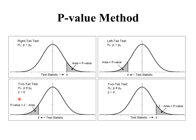In a two-tailed test, things are a bit more complicated. The test statistic could be negative or positive. If we get a negative test statistic, the area to the left is smaller than the area to the right, so we find that area to the left, multiply by two, and get our p-value. If the test statistic is positive, the area to the right is less than the area to the left, so we find the area to the right, multiply by two, and get the p-value.